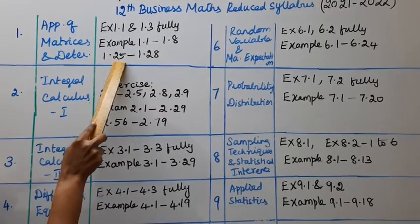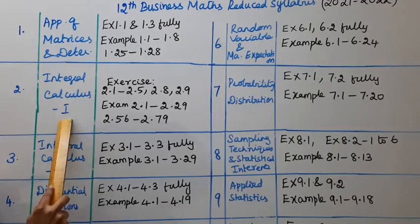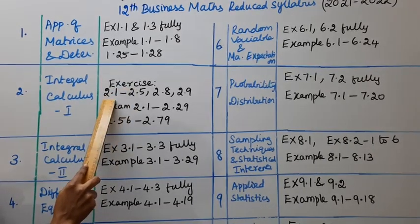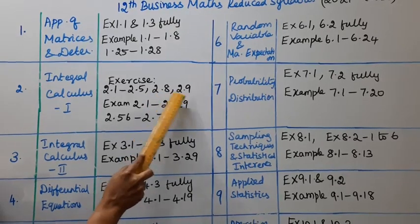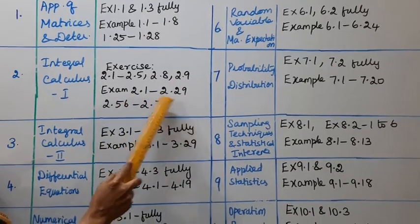Second chapter: Integral Calculus 1. Exercise 2.1 to 2.5, 2.8, 2.9. Example 2.1 to 2.29, and Example 2.56 to 2.79.